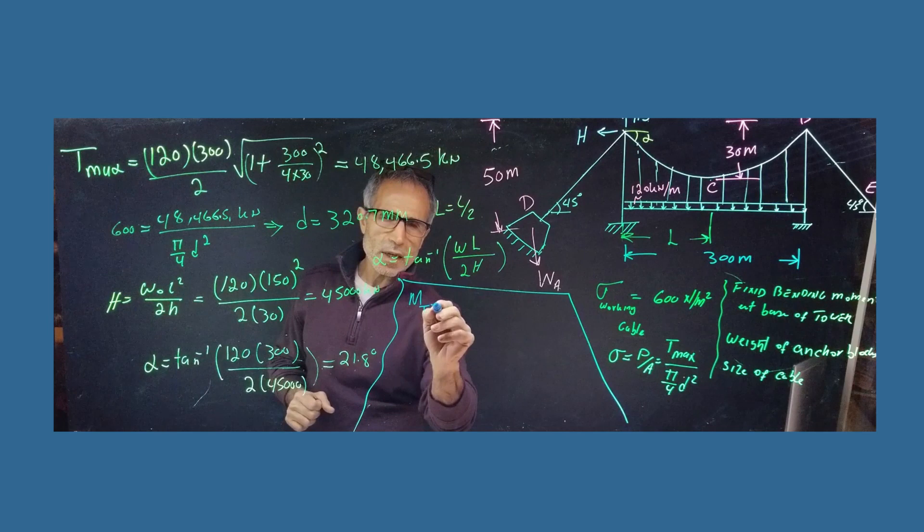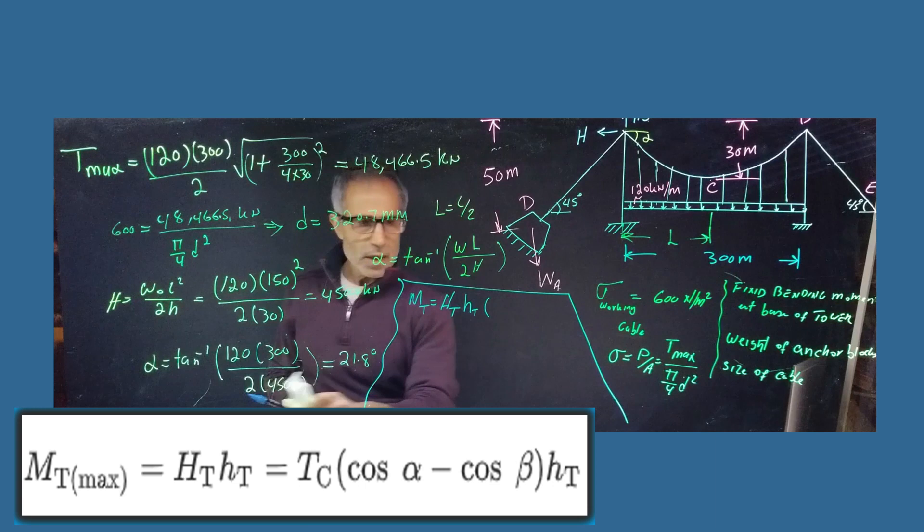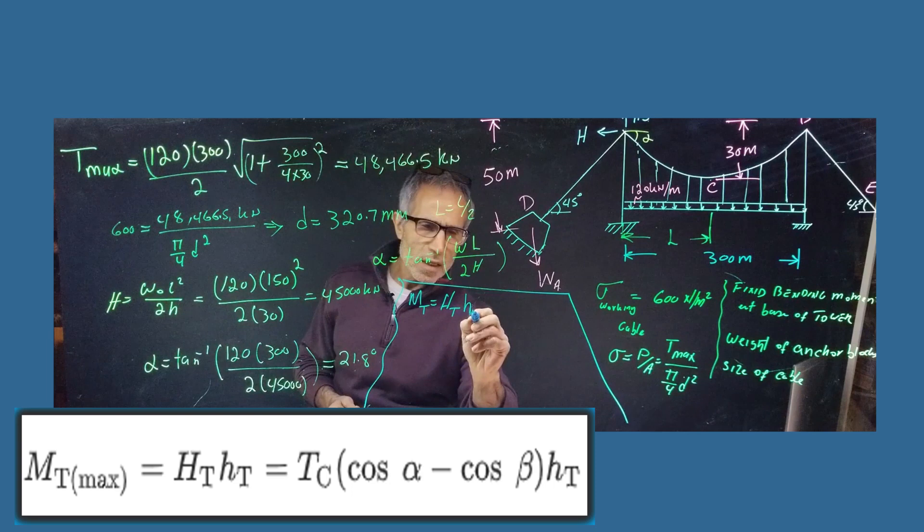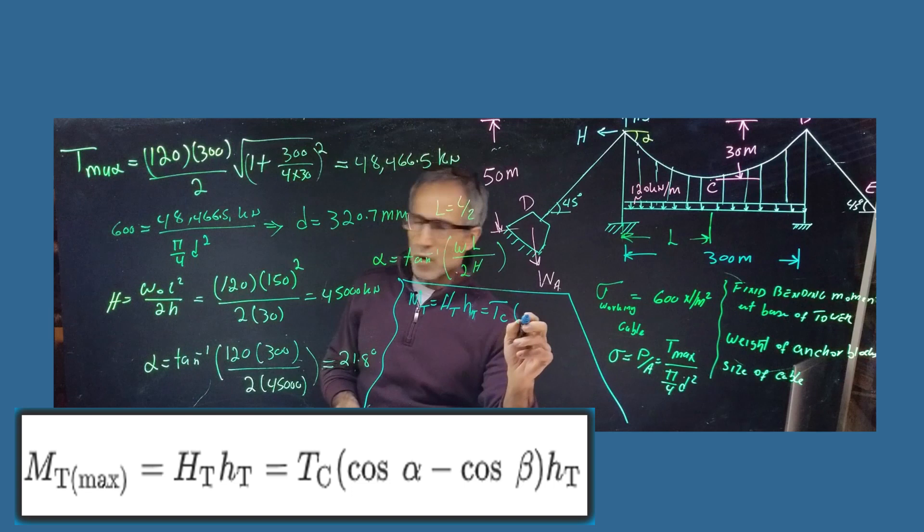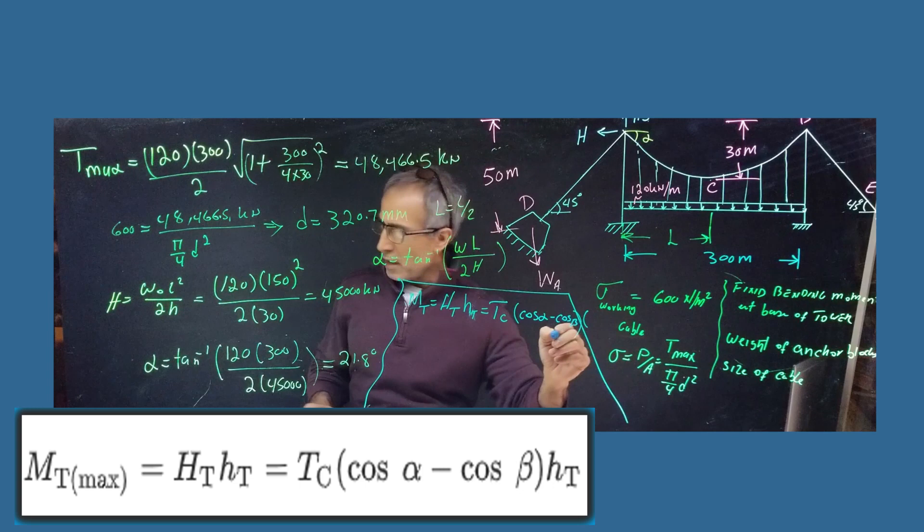And let's proceed to find the moment at the base of the tower. So MT came out to be HT. And that's MHT. It's same as TC multiplied by cosine alpha minus cosine beta.